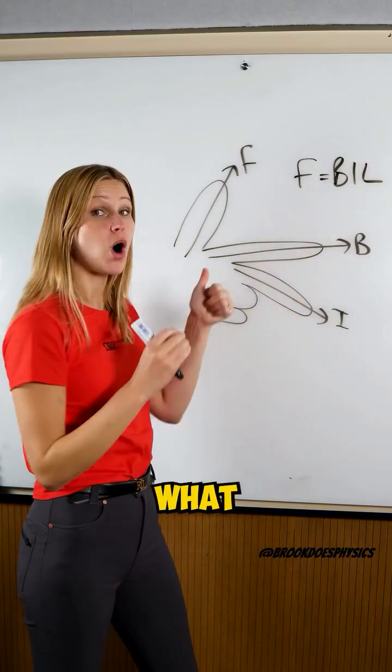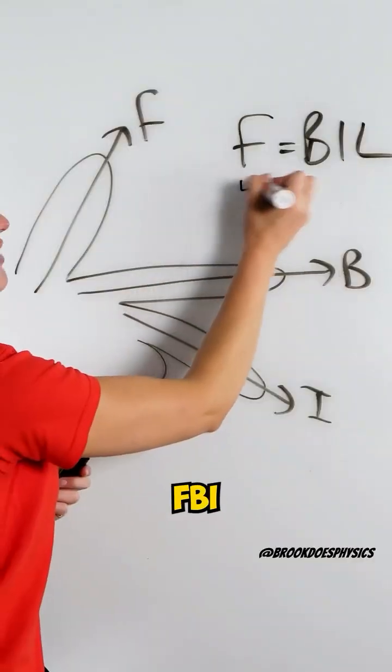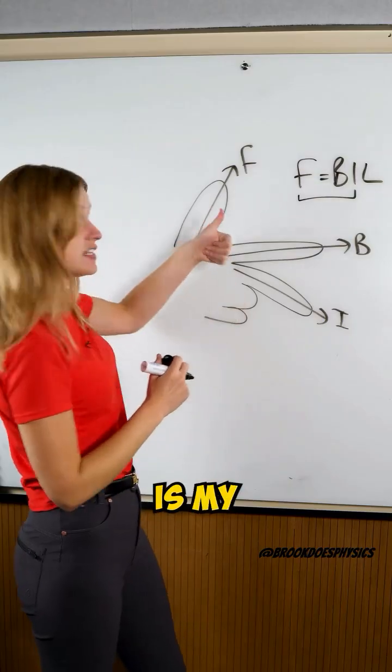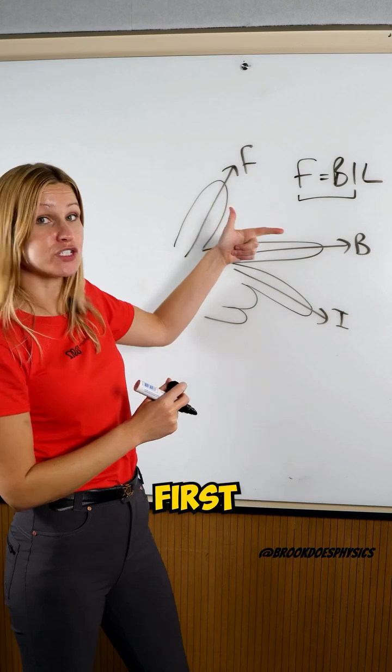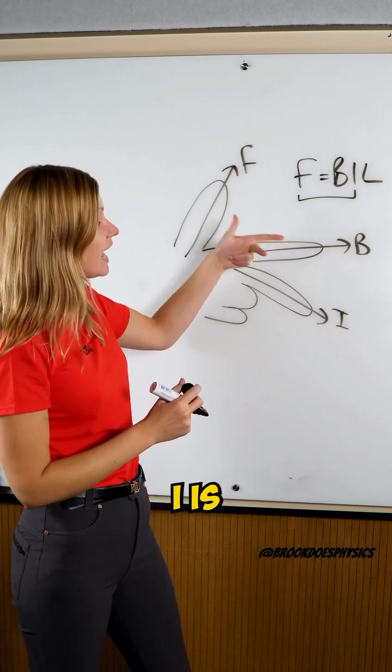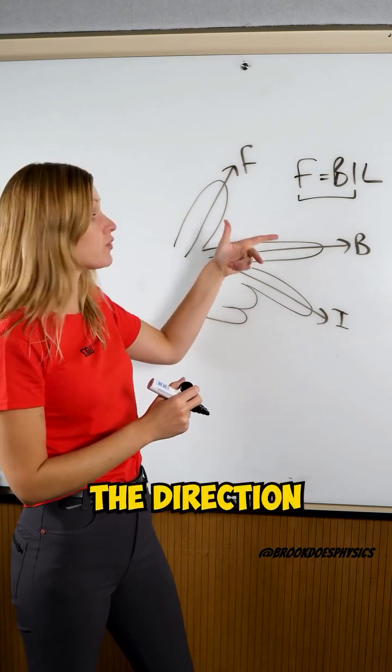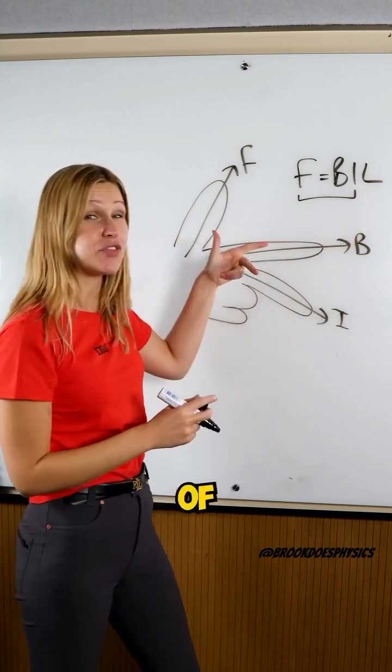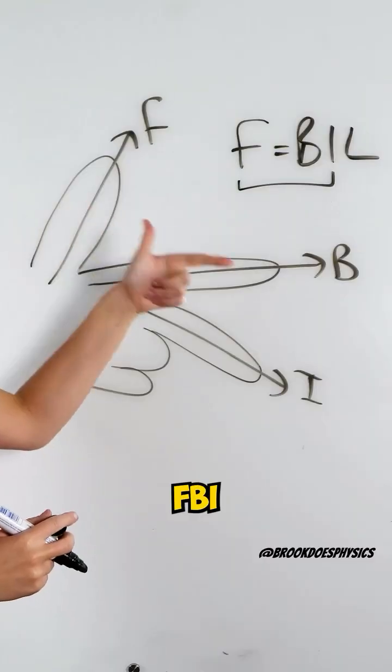So the equation helps us out remember what our fingers are because I can see FBI. So F is my thumb, B is my first finger, the magnetic field, and I is my next finger which is the direction of the current. And then L is just whatever length of that wire is, so FBI.